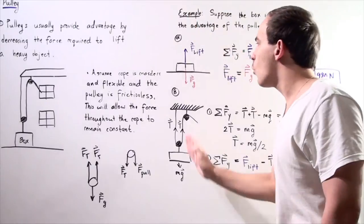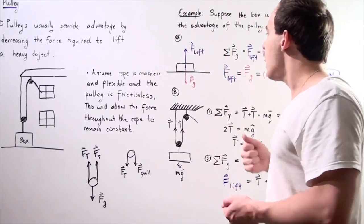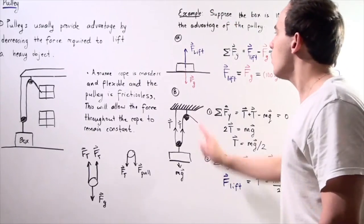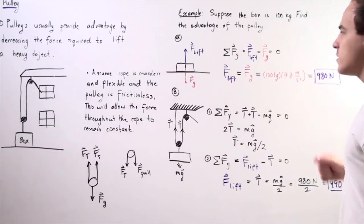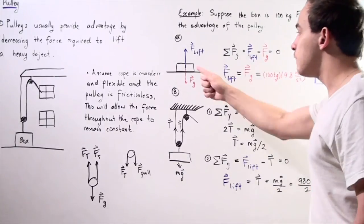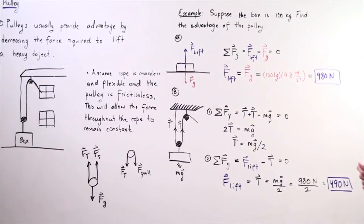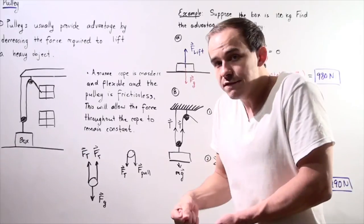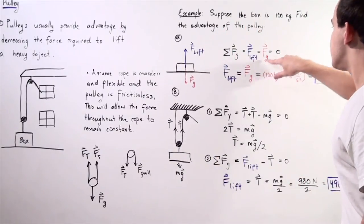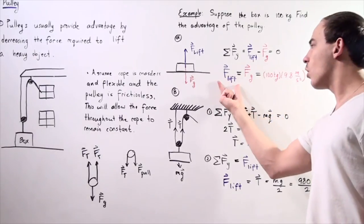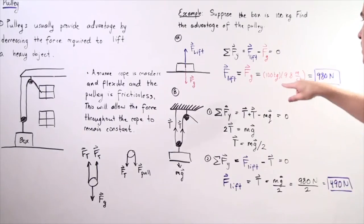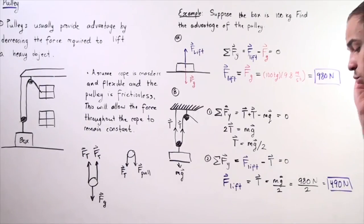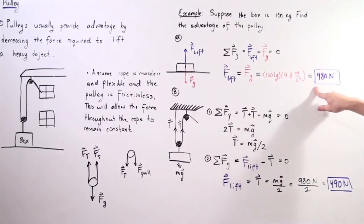For the box without a pulley, we have two forces: the lifting force upward and the force of gravity downward. Taking upward as positive and downward as negative, the sum of forces equals zero: F_lift minus F_gravity equals zero, so F_lift equals mg. With a mass of 100 kilograms and g equal to 9.8 m/s², the force required to lift the box is 980 newtons.